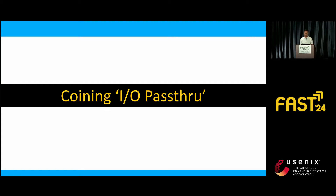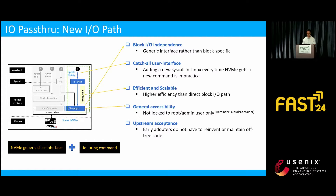Now let's look at how we solve this problem with IO pass-through. The path is shown with the dotted green rectangle. This path is block-IO independent. It has a catch-all syscall interface, so one doesn't need to write anything new as far as syscalls are concerned. It shows higher efficiency than block IO, is not limited to the root user, and it's upstream — so early adopters do not have to reinvent or maintain off-tree code.